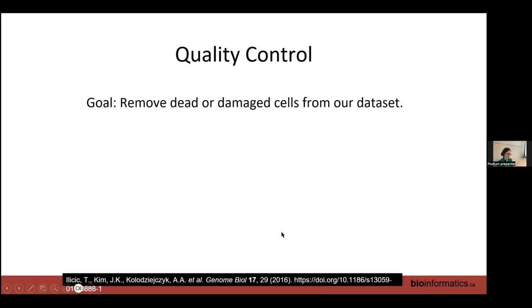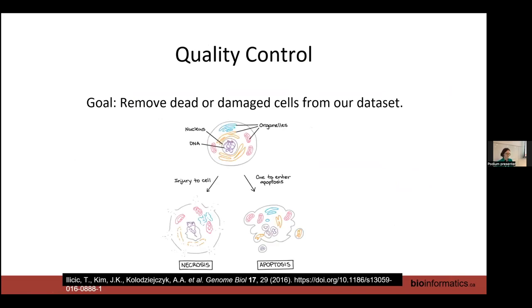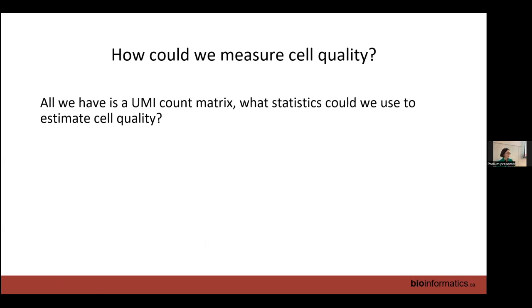The point of quality control is to remove dead or damaged cells from your dataset. When we're handling our tissue and ripping it apart into individual cells, we're going to disturb those cells and some of them will get killed, freak out and commit apoptosis, or get damaged from the physical act of going through the tubes in our 10x machine. We can't see our cells or use a stain to determine if they're alive or dead - all we have is our UMI count matrix, so we need statistics to estimate cell quality.